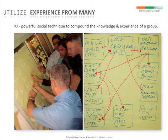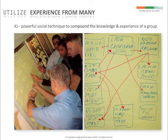KJ technique is a powerful social technique to compound the knowledge and experience of a group. This is not a clustering technique where software and computers can help. It has to be done by people.